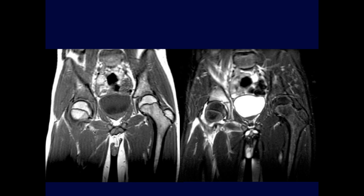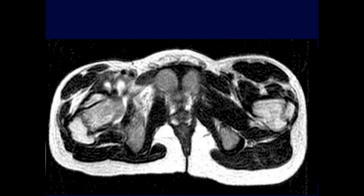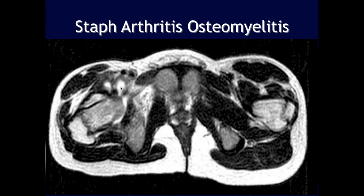Right hip pain in a young kid. There's abnormal signal in the superior acetabulum on STIR sequences — markedly hyperintense with low T1 signal. The cortex of the acetabulum looks intact and the femoral head appears fairly spared. There's a moderate joint effusion and what looks like an iliopsoas bursal effusion. In a child, joint effusion always raises concern for joint infection — and these are emergencies that must be diagnosed and treated immediately.